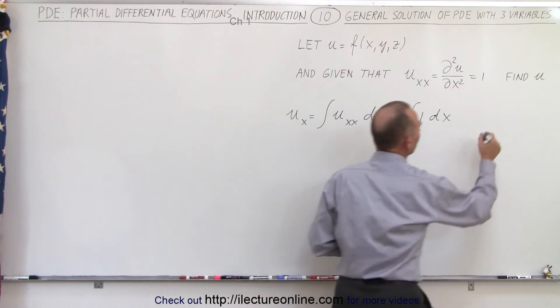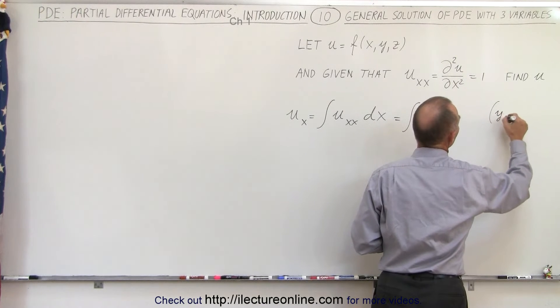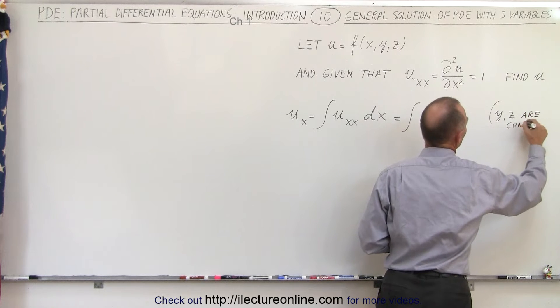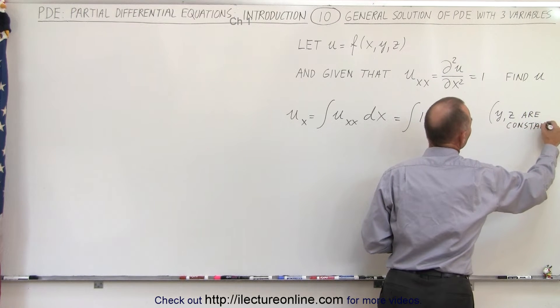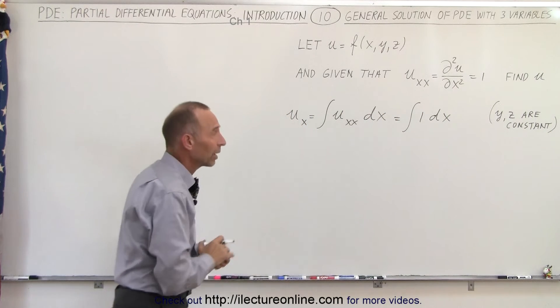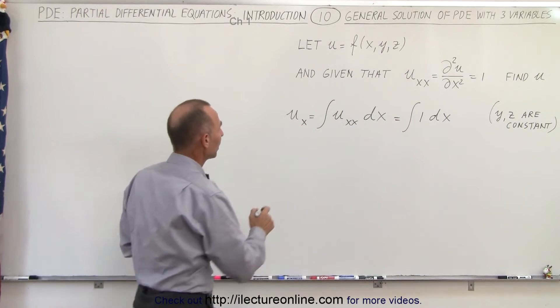So that means this is equal to the integral of 1 times dx. And again, keep in mind that both y and z are constant. So it's not a bad idea to write that on the side to remind yourselves, I'm integrating over x, but I know y and z are constant. So when we do that, we get the following.